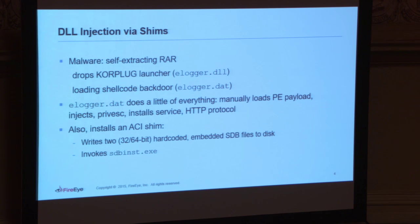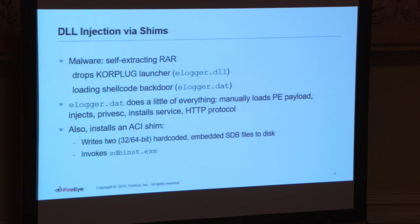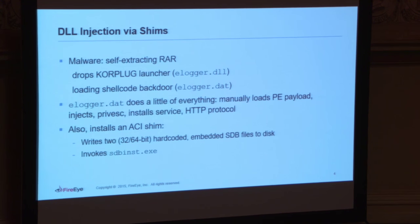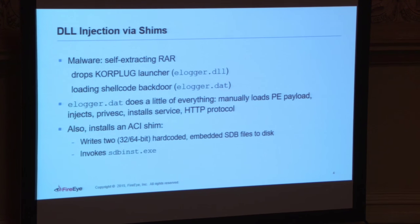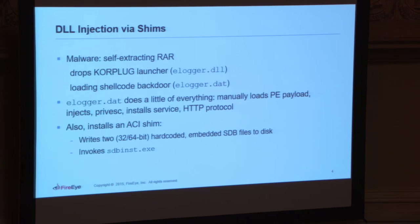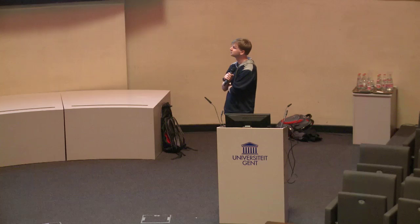They were getting spear phished emails and our boxes weren't firing. The client wasn't happy. We wanted to get in and figure out what was going on — how come our boxes weren't detecting this malware, and the malware was still persisting on the system? We pulled up IDA Pro, started disassembling, and it turns out that this malware was using the application compatibility infrastructure to maintain persistence on the box. The main payload attached to the email was a self-extracting RAR — you double-click on it, it drops files on the file system and starts executing new code.